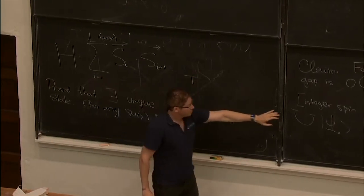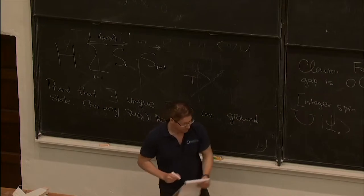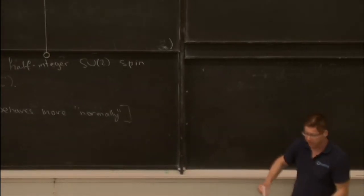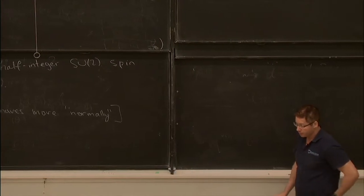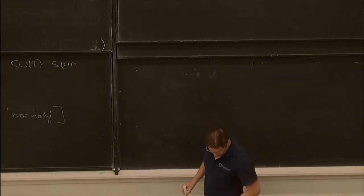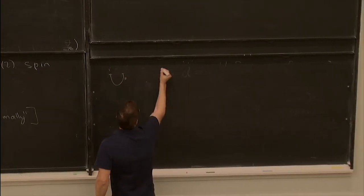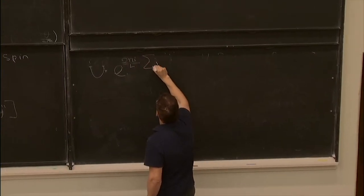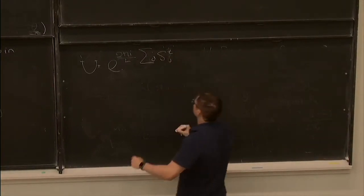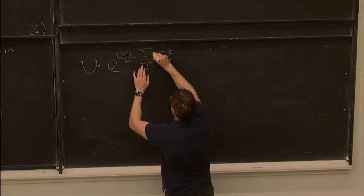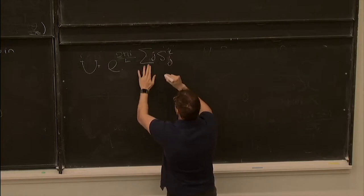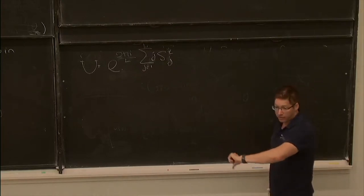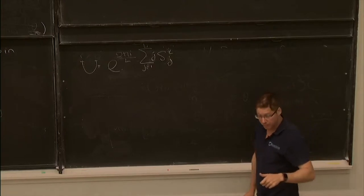There is a very deep lesson here: translational symmetries on the lattice may not map to translations in spacetime in the continuum limit — that's why I'm going through this exercise. In normal lattice systems, translations on the lattice do map to translations in spacetime, but not here and not in many other interesting systems in three dimensions. The operator U is defined as the exponential of 2πi/L times the sum over J of S_J^Z, where J runs over all lattice sites from 1 to L.